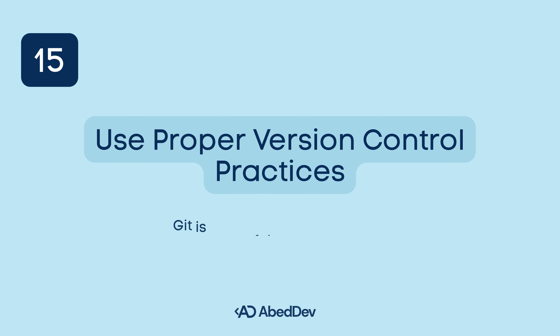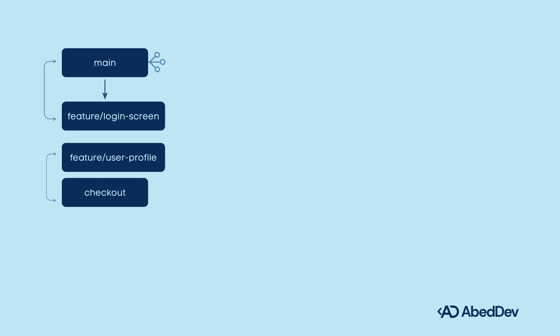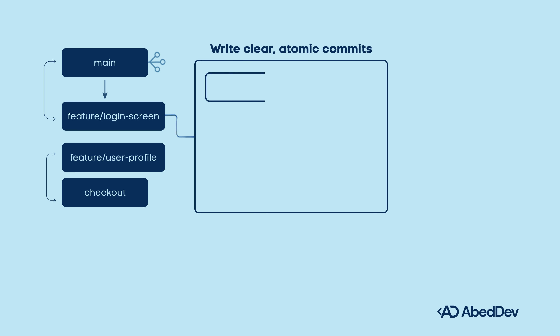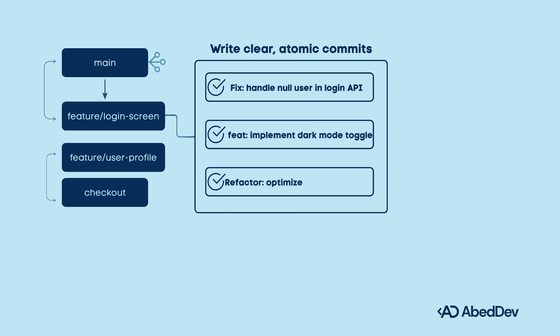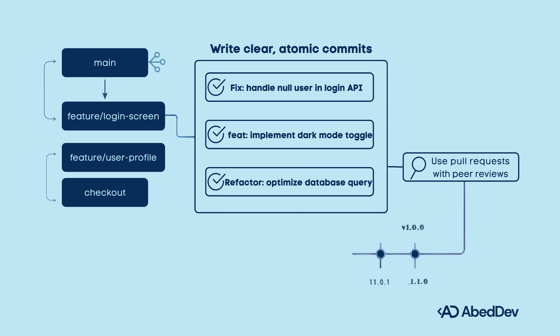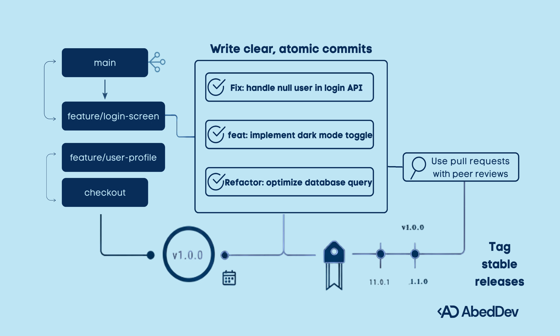Use proper version control practices. Git is powerful — use it properly. Use feature branches: the main branch remains clean and deployable while features are developed and tested on dedicated branches. Write clear, atomic commits — each commit should be a single logical unit of work with a message describing what was changed and why. Use pull requests with peer reviews before merging. Tag stable releases so the team can easily identify, check out, and redeploy the exact version shipped to users.